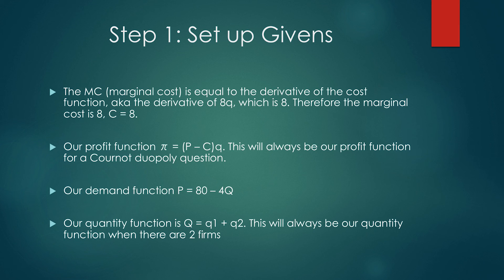Our demand function is P equals 80 minus 4Q. Our quantity function is Q equals q1 plus q2. This will always be our quantity function when there are two firms.